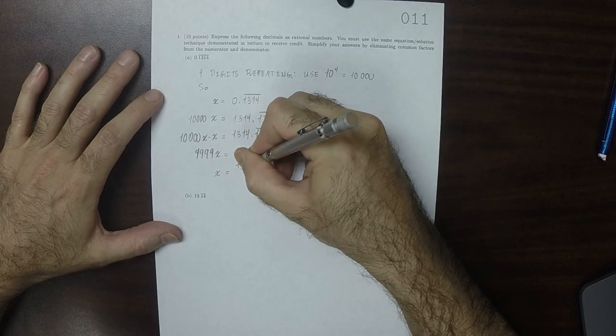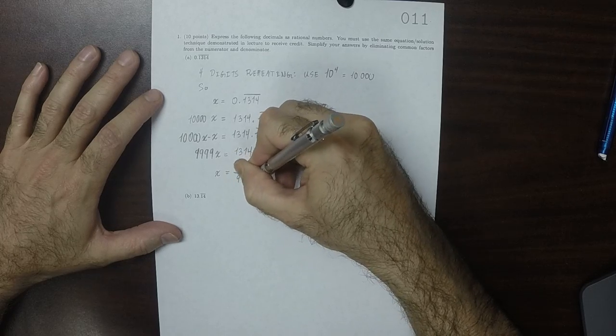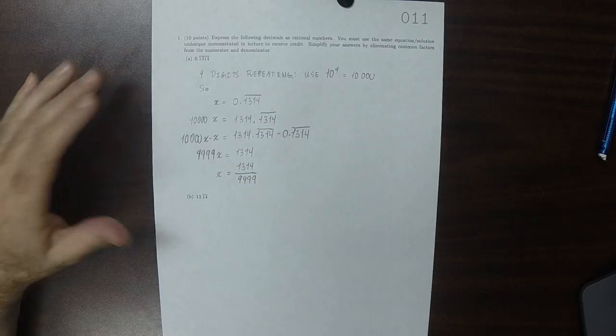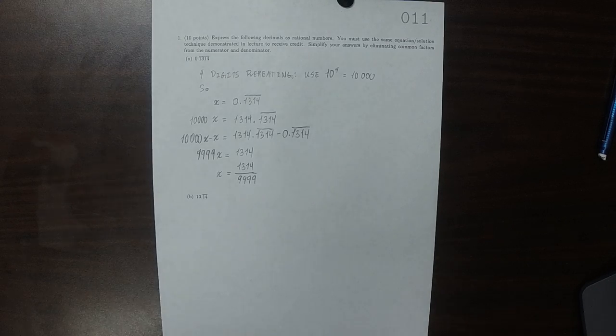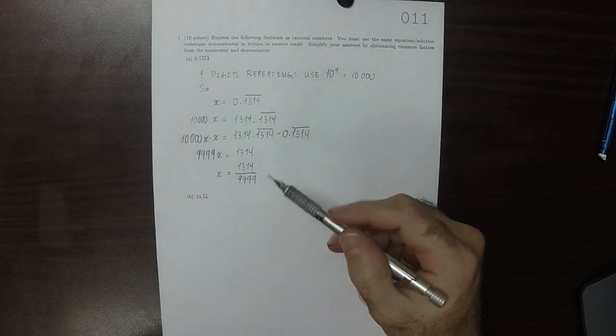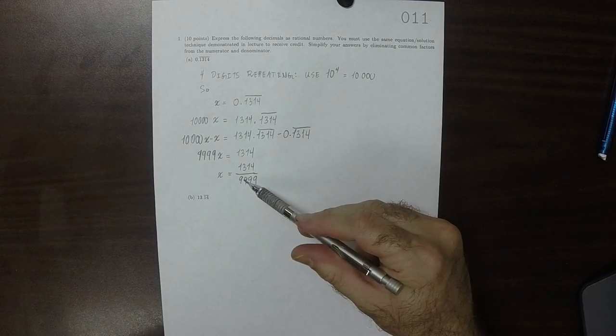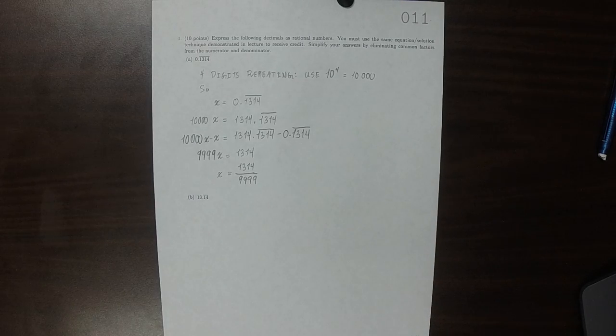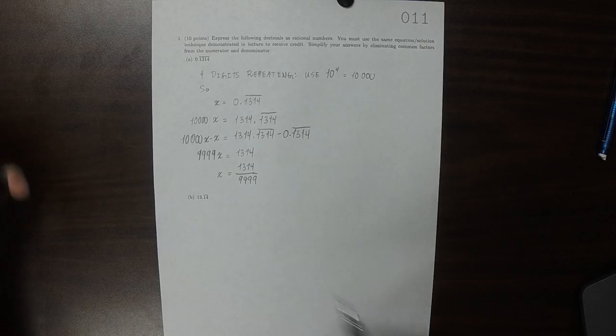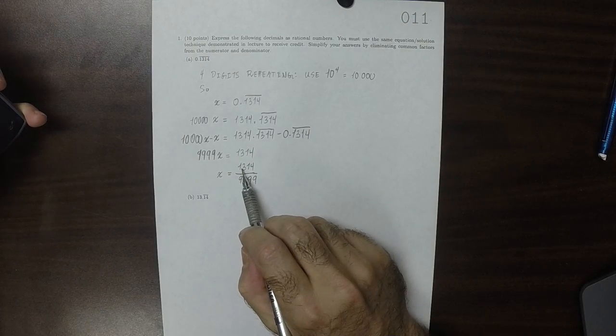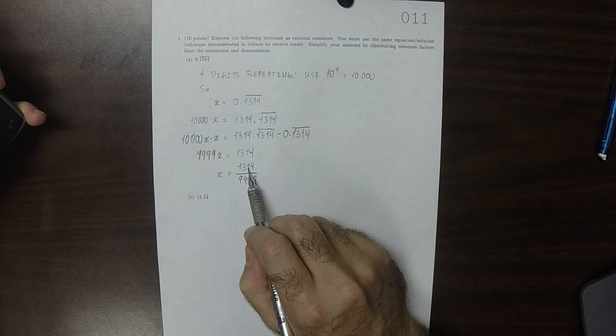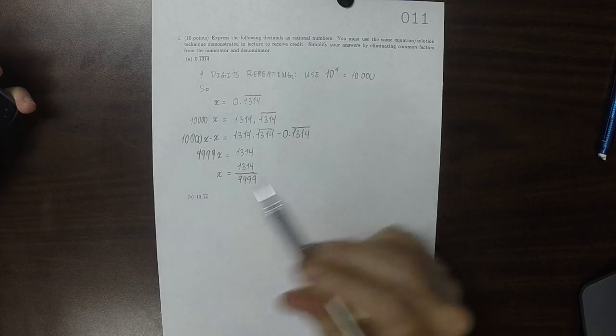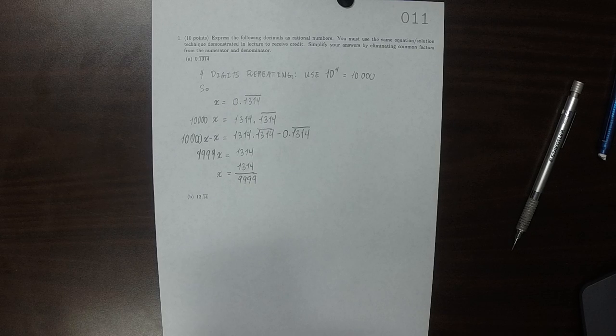So x is 1314 divided by 9999. And then it says to cancel out any common factors. So all those 9s, that's divisible by 3. Is 1314 divisible by 3? You can check that by adding up the digits. So 1 plus 3 is 4, plus 1 is 5, plus 4 is 9, which is divisible by 3. So 1314 is divisible by 3.